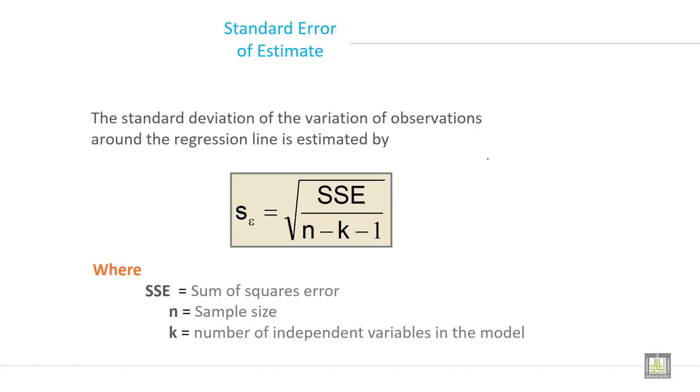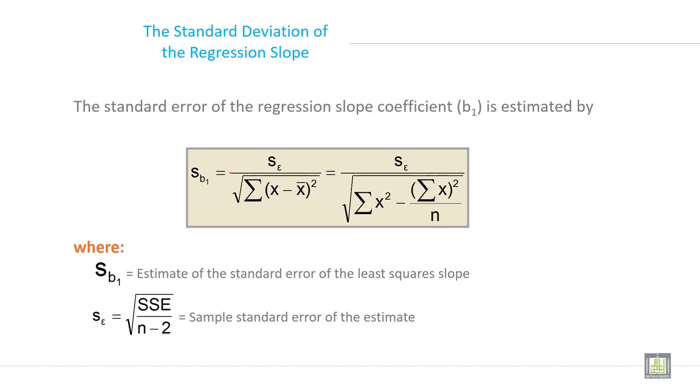The standard deviation of the variation of observation around the regression line is estimated by SE equals under root SSE divided by n minus k minus 1, where SSE is sum of square error, n is sample size, and k is number of independent variables in the model.